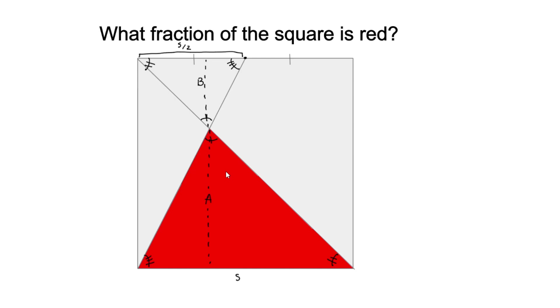we can infer that its height will also be twice as big as triangle B's. Therefore, its area would be four times that of triangle B. So, let A be the area for triangle A; therefore, the area for triangle B would be A over four.